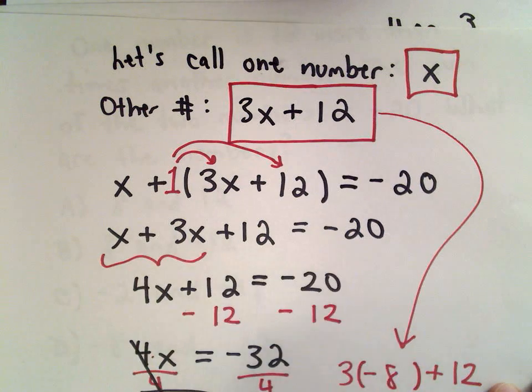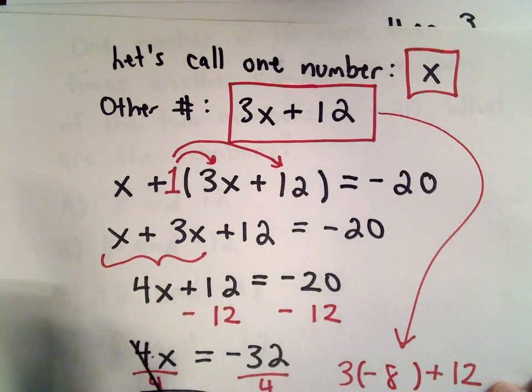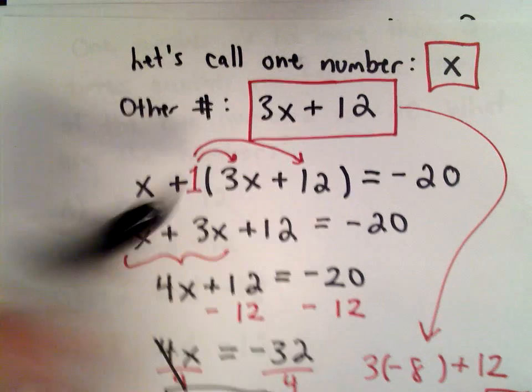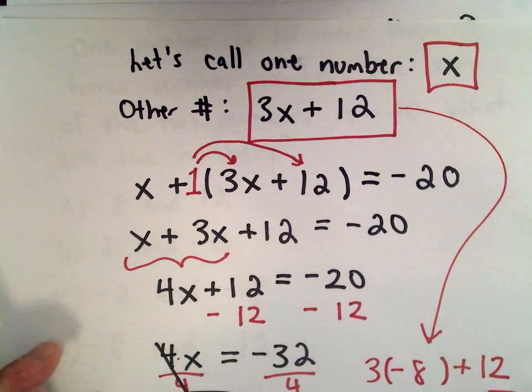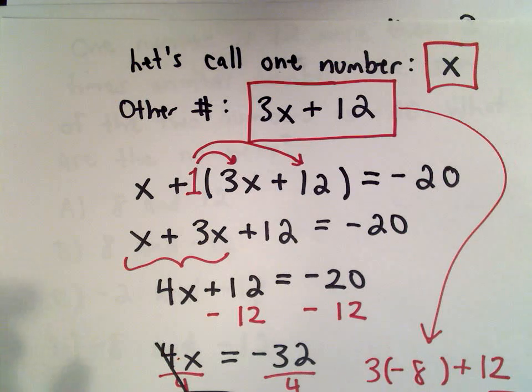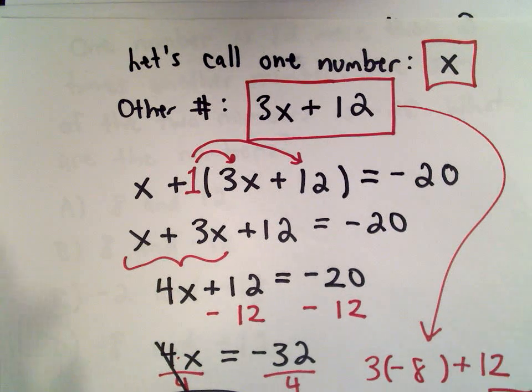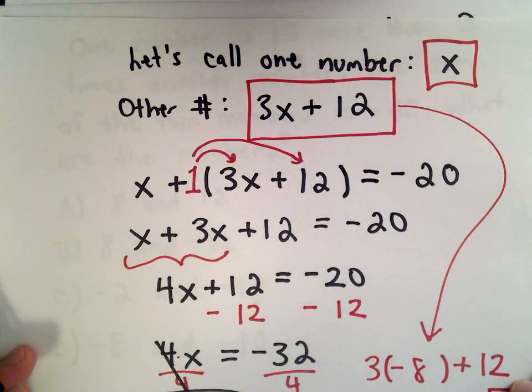We're given that we add them together and get negative 20. Solving the algebra may be a little tricky, but I think most people would get tripped up on this step. At least that's where my brain kicks into overdrive and I start thinking a little harder.